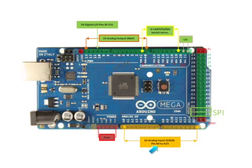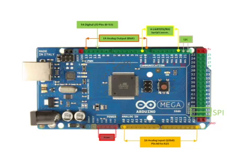There are 16 analog input pins, those shaded in yellow, labeled from pin A0 to pin A15. Each pin provides a 10-bit input resolution, that is a range of 1024 different values from 0V to 5V.